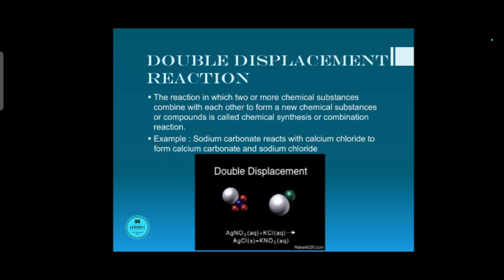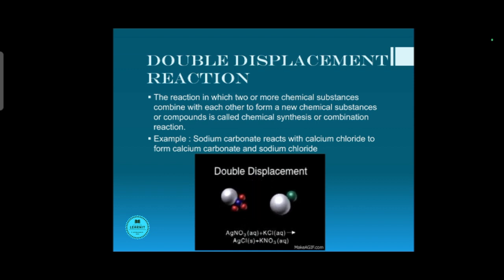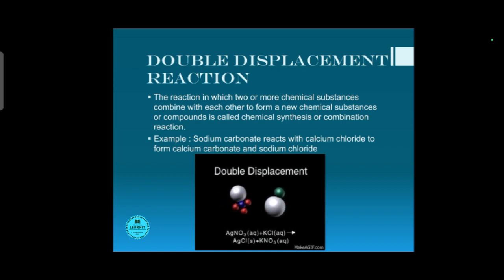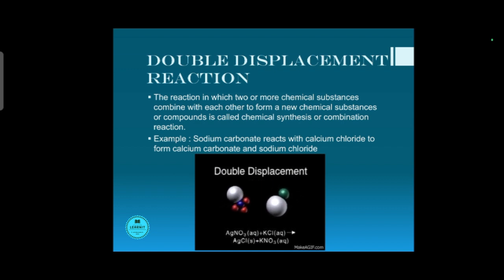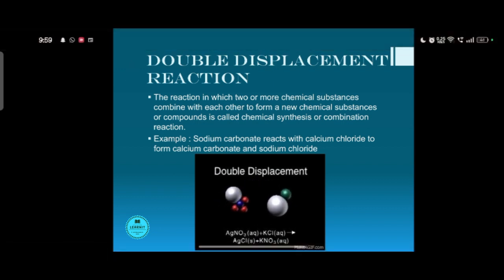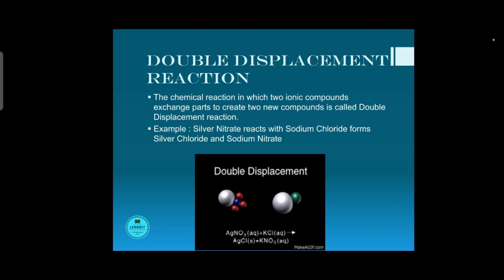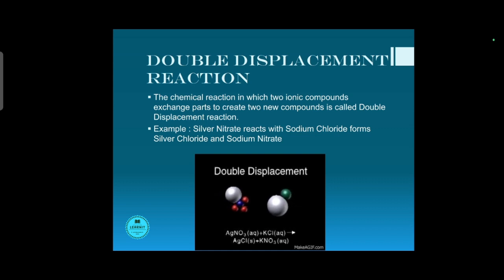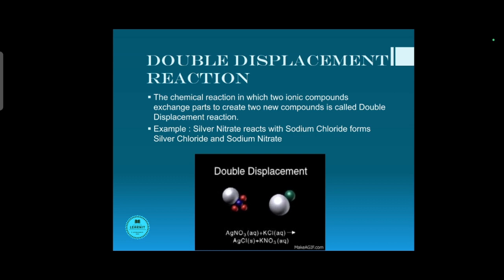Finally, double displacement reaction. The chemical reaction in which two ionic compounds exchange parts to create new compounds is called a double displacement reaction. For example, silver nitrate reacts with sodium chloride to form silver chloride and sodium nitrate.